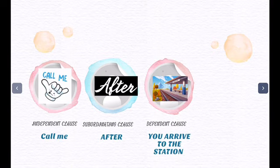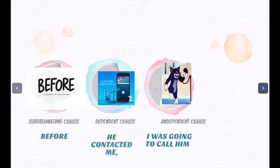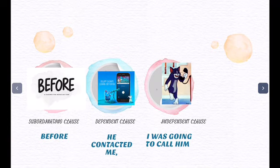The first example: the independent clause is 'call me,' the subordinating conjunction is 'after,' and the dependent clause is 'you arrive to the station.' So the full sentence is: 'Call me after you arrive to the station.' Another example uses 'before' as the subordinating conjunction: 'before he contacted me' — remember to put a comma after the dependent clause — then add the independent clause 'I was going to call him.' So the full sentence is: 'Before he contacted me, I was going to call him.'